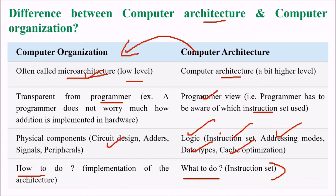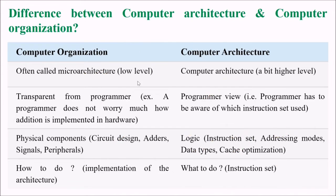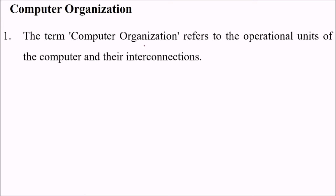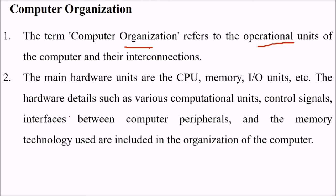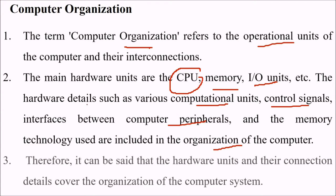Organization is the implementation of computer architecture. Computer organization refers to the operational units of the computer and their interconnections. The main hardware units are CPU, memory, and input/output units. Hardware details such as various computation units, control signals, interfaces between computer peripherals and the memory technology used are all included in the organization of the computer. The hardware units and connection details cover the organization of the computer system.